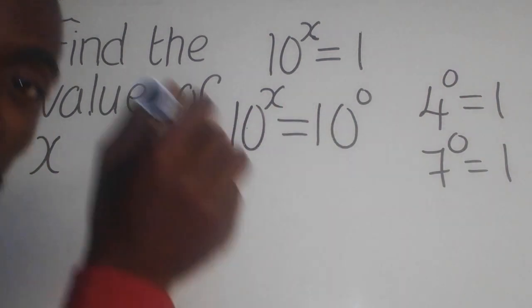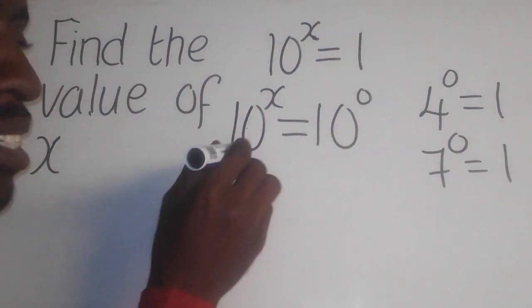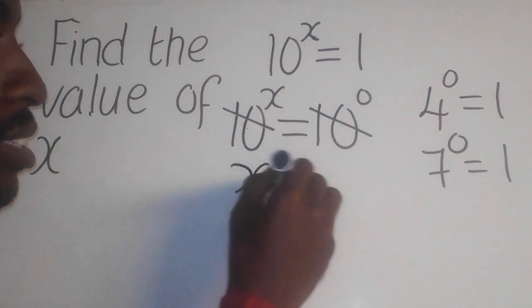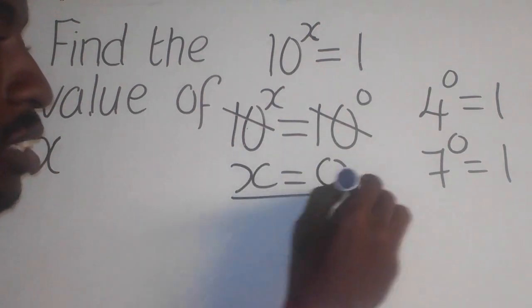Now, since we have the same base, we can simply cancel out like this. Now, we say x is equal to 0, which is the answer.